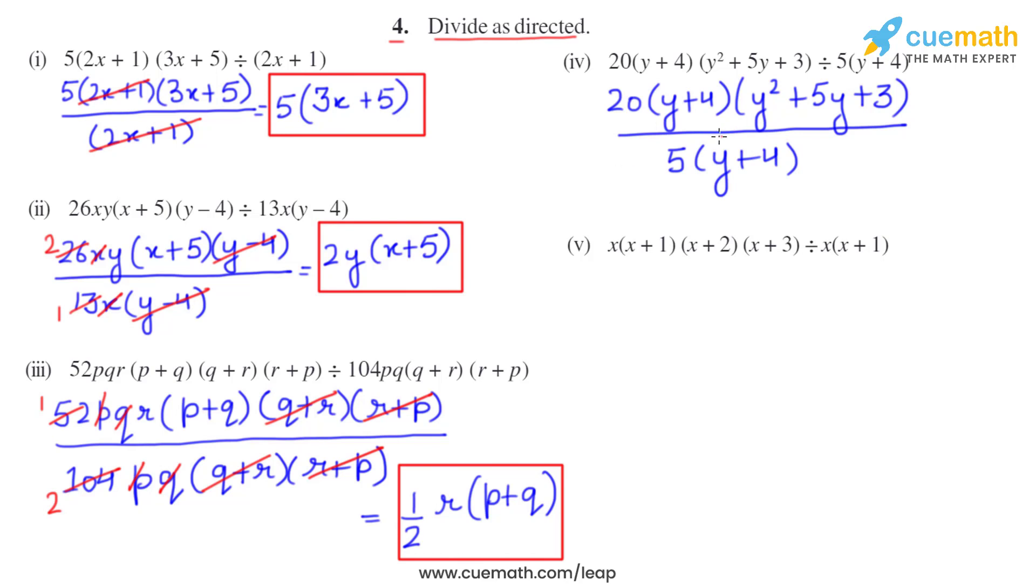y+4 and y+4 gets cancelled directly. 20 divided by 5 is 4. So we are left with 4(y²+5y+3). This is the answer for the fourth part.